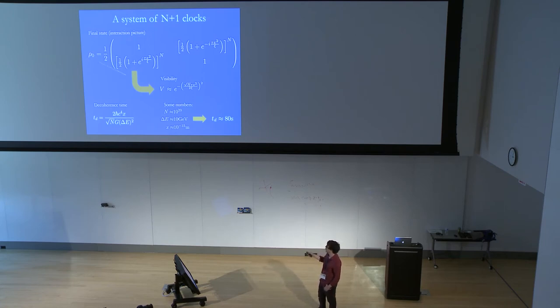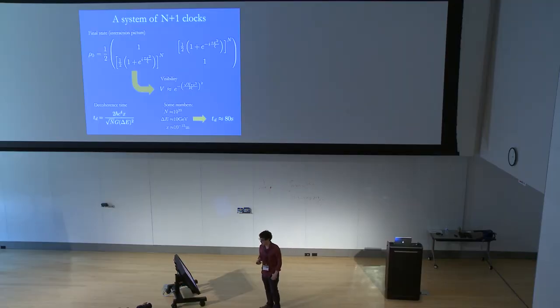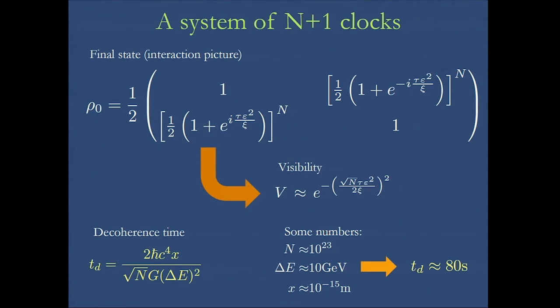So just to put some kind of numbers with no attempt to be realistic here, if we take a macroscopic number of clocks, say 10 to the 23, thinking of this grid of spacetime and this general relativistic picture, and we put the clocks to have an energy gap of 10 GeV, like bound states of particle physics, and we pack all these clocks in a distance of 10 to the minus 15 meters, we see that the clock is no longer able to work as a clock after 80 seconds.